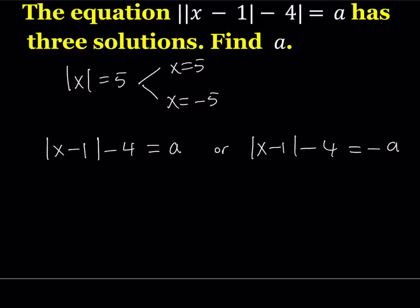So let's add 4 to both sides. That's going to give me a plus 4. And this is going to give me 4 minus a. I was supposed to write 4 minus a. I confused myself. Okay, so we get these two solutions.